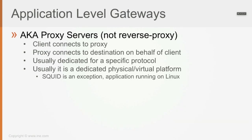All this works — we've seen this before when speaking about web security appliances. The client connects to the proxy, and then the proxy connects to the destination on behalf of the client. Application level gateways are generally dedicated for specific protocols, and usually it is a dedicated physical or virtual platform in most cases.